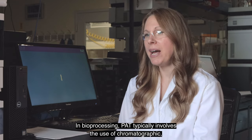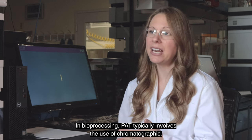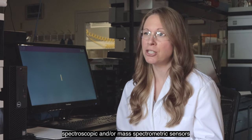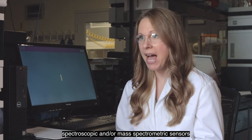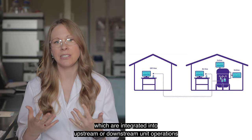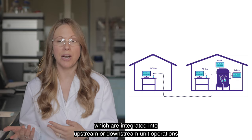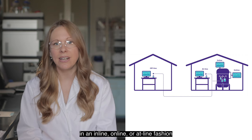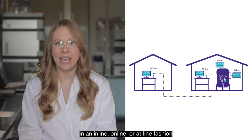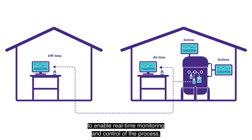In bioprocessing, PAT involves the use of chromatographic, spectroscopic, or mass spectrometric sensors, which are integrated into upstream or downstream unit operations in an in-line, online, or at-line fashion. This enables the process to be monitored and controlled in real time.